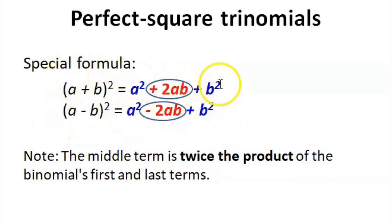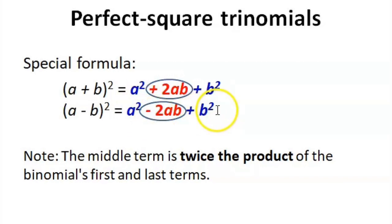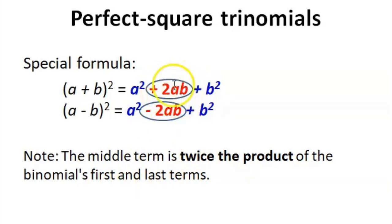In factoring perfect square trinomials, we have to remember these two special formulas. First, we have: quantity (a + b) squared equals a squared plus 2ab plus b squared. And the second one is: quantity (a − b) squared equals a squared minus 2ab plus b squared. Note that the middle term is twice the product of the binomial's first and last terms. They only differ in the sign of the middle term — one has positive 2ab, and the other has negative 2ab.